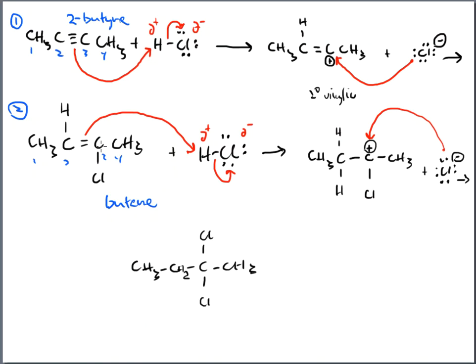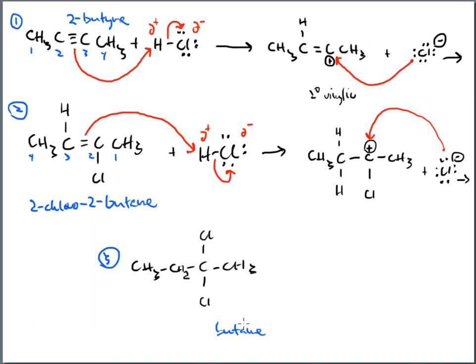But wait — numbering from either side gives carbon 2 for the double bond, so it's a tie. We need to look at other substituents: there's a chlorine. To give it the lower number, we number from the right, giving us 2-chloro-2-butene. Then for the final alkane product — it's a butane with all single bonds.